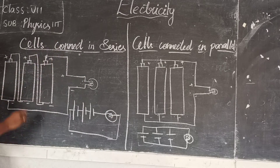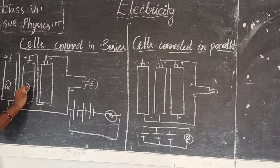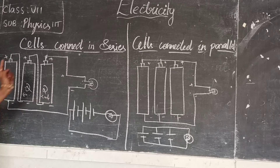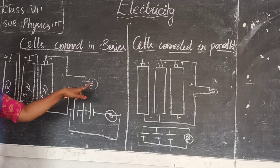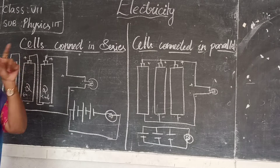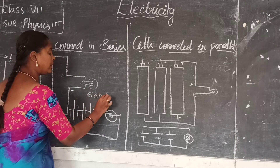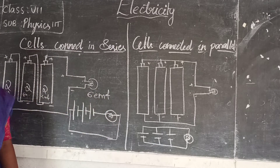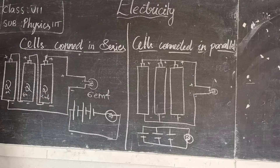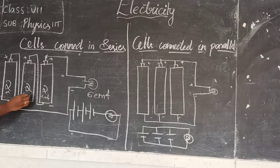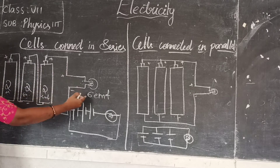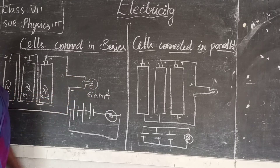In series, if the EMF of each cell is 2, then the total EMF supplied to the bulb is 2 plus 2 plus 2, which equals 6. So 6 EMF will flow to the bulb. EMF is nothing but electromotive force — the movement of electrons in the cell. The EMF of the first, second, and third cells are each 2, and if we sum all the EMFs of these 3 cells, that total amount is supplied to the bulb and the bulb glows brighter.